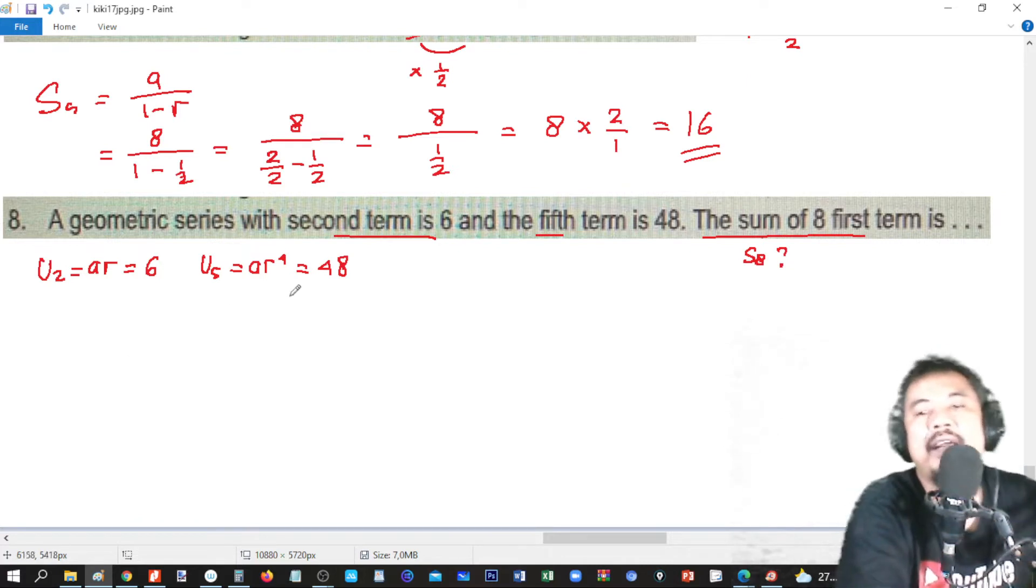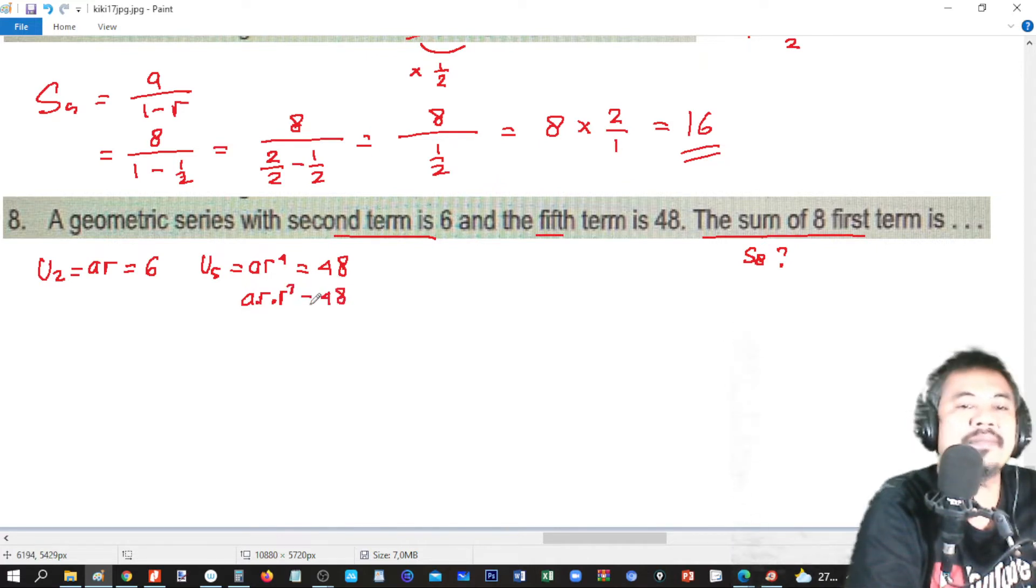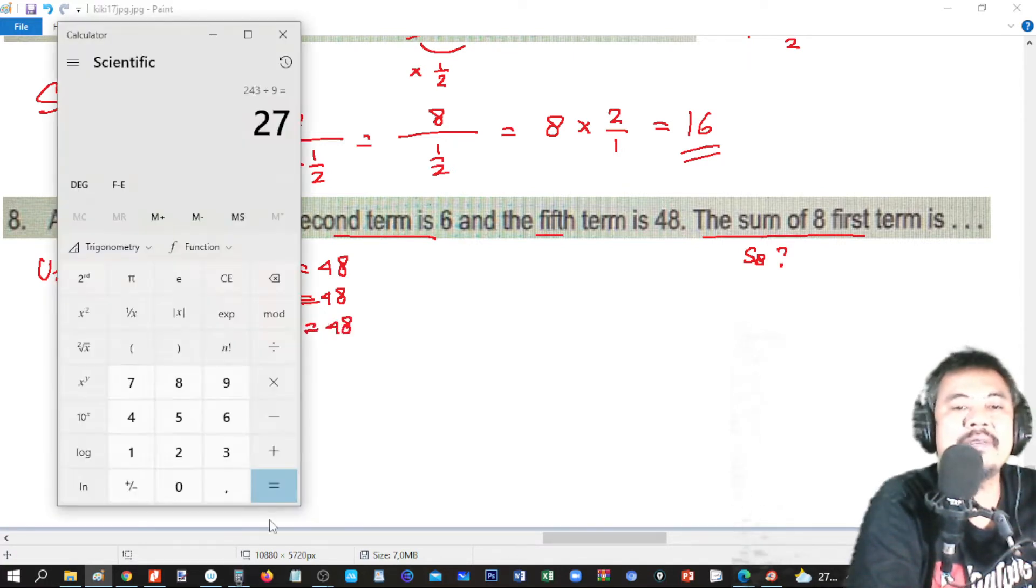We have to find A and R. So we can take A times R to the power 3 equals 48, and AR equals 6. We can divide 48 by 6, which is equal to 8.